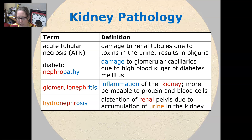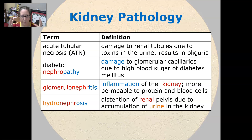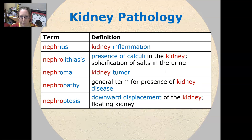Glomerulonephritis is an inflammation of the kidney where the kidney becomes more permeable to proteins and blood cells, so you will see blood and protein in the urine. Hydronephrosis is the distension of the renal pelvis due to accumulation of urine in the kidney — it's as if the bladder is backed up into the ureters and then into the kidneys.